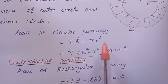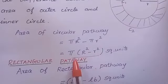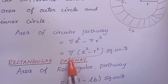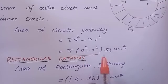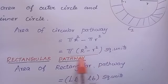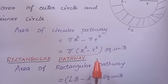From these two terms, we can take π outside. So the formula becomes π into (R² minus r²) square units. This is the formula to find out the area of a circular pathway.